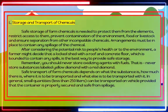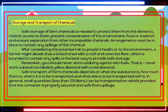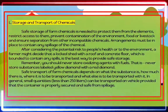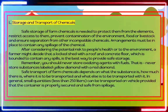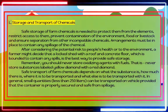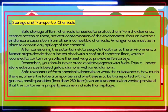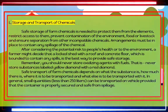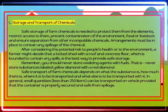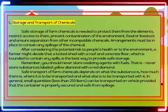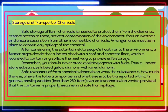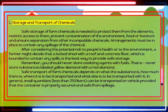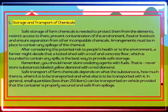Storage and transport of chemicals: Safe storage of farm chemicals is needed to protect them from the elements, restrict access, prevent contamination of the environment, food, or livestock, and ensure separation from incompatible chemicals. Arrangements must be in place to contain any spillage. A locked shed with a roof and concrete floor bounded to contain spills may be the best solution. Never store oxidizing agents with fuels — that is, never store substances labeled with a yellow diamond near substances with a red diamond. Small quantities (less than 250 liters) can be transported on a vehicle provided the container is properly secured and safe from spillage.